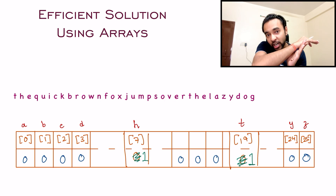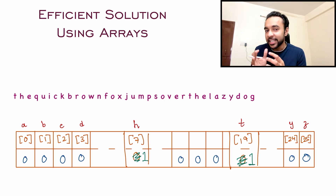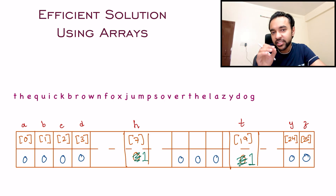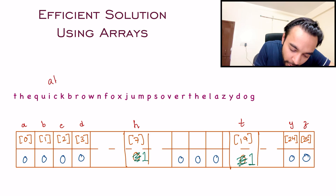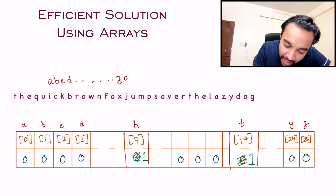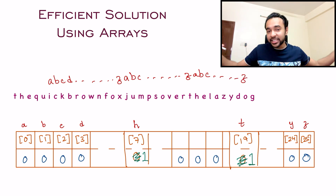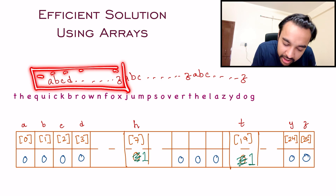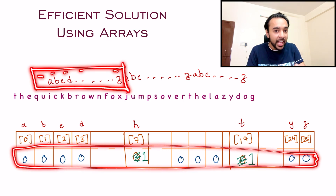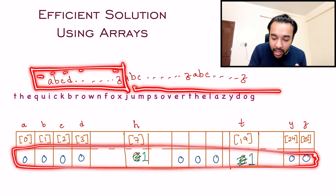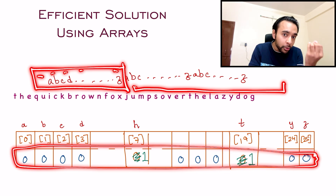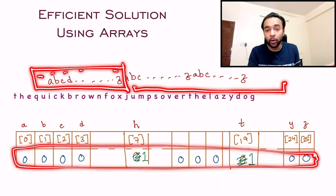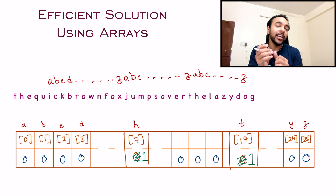This is a very efficient approach because you are iterating through the string only once. But there can be some cases where the interviewer asks you to optimize this problem even further. Try to think about what happens if you get a string that has all the letters of the English alphabet A, B, C all the way up to Z — and then once again all the characters A, B, C all the way up to Z — repeated several times. In that case, once you are done with the character Z, you have already filled up your entire array and all the values are 1. But you still have the rest of the string remaining and you have to parse all of it, with no way to check if you are already done. So in those kinds of edge cases, you can try to come up with an even more efficient approach.